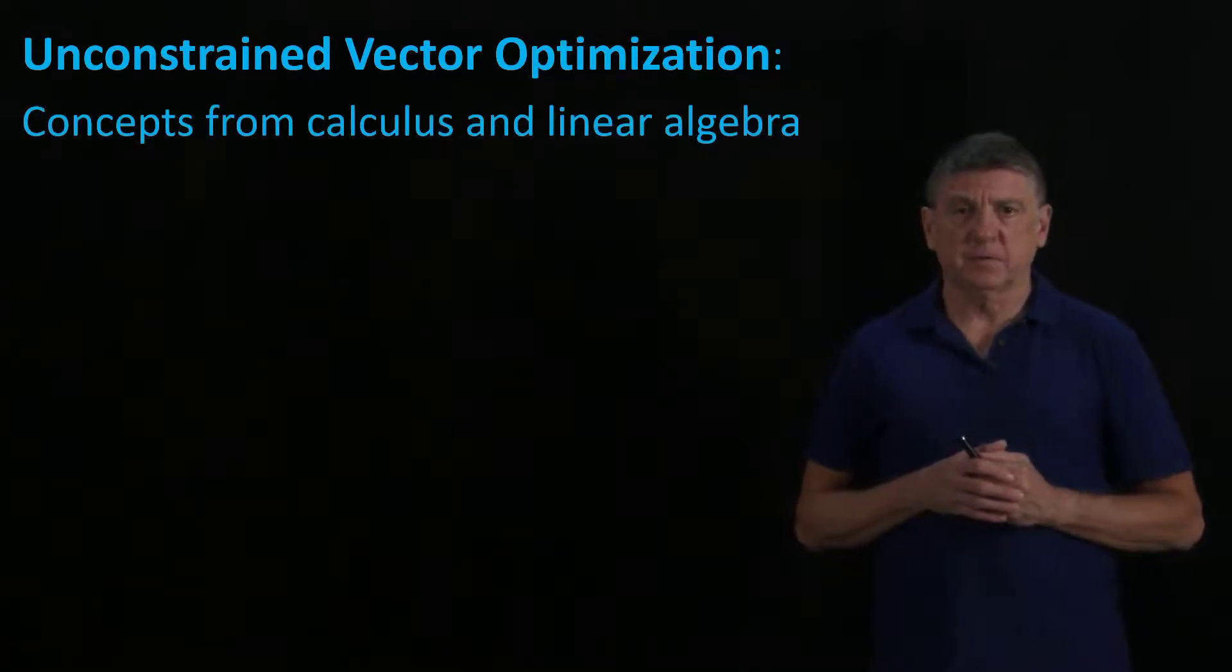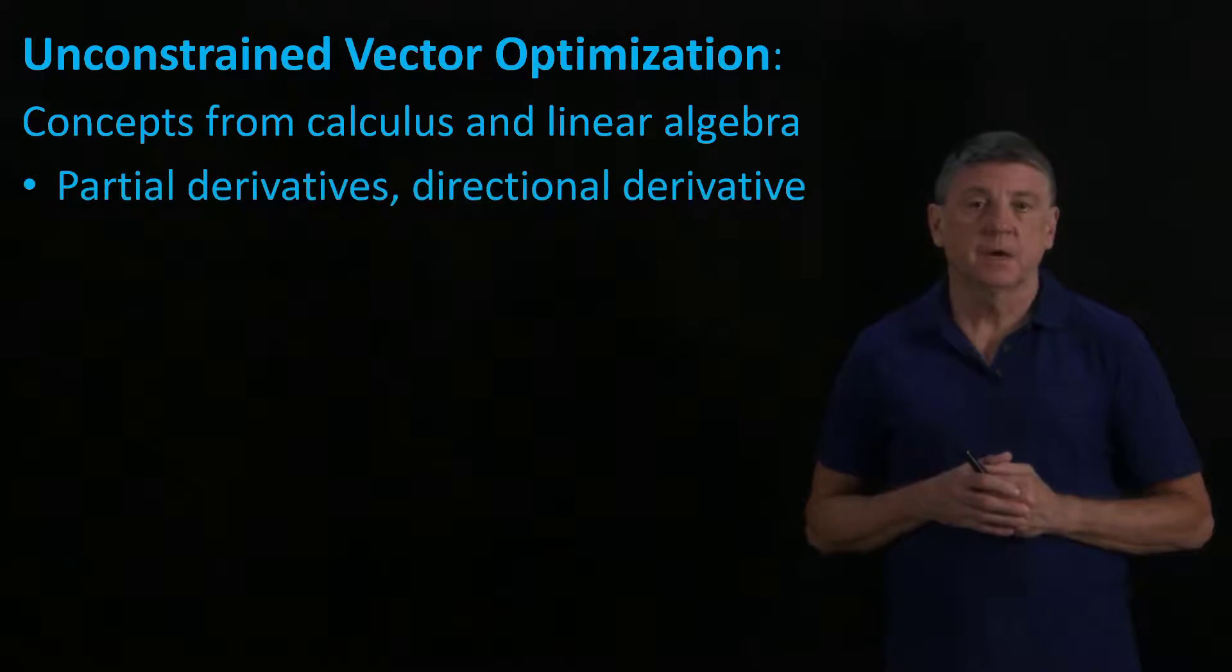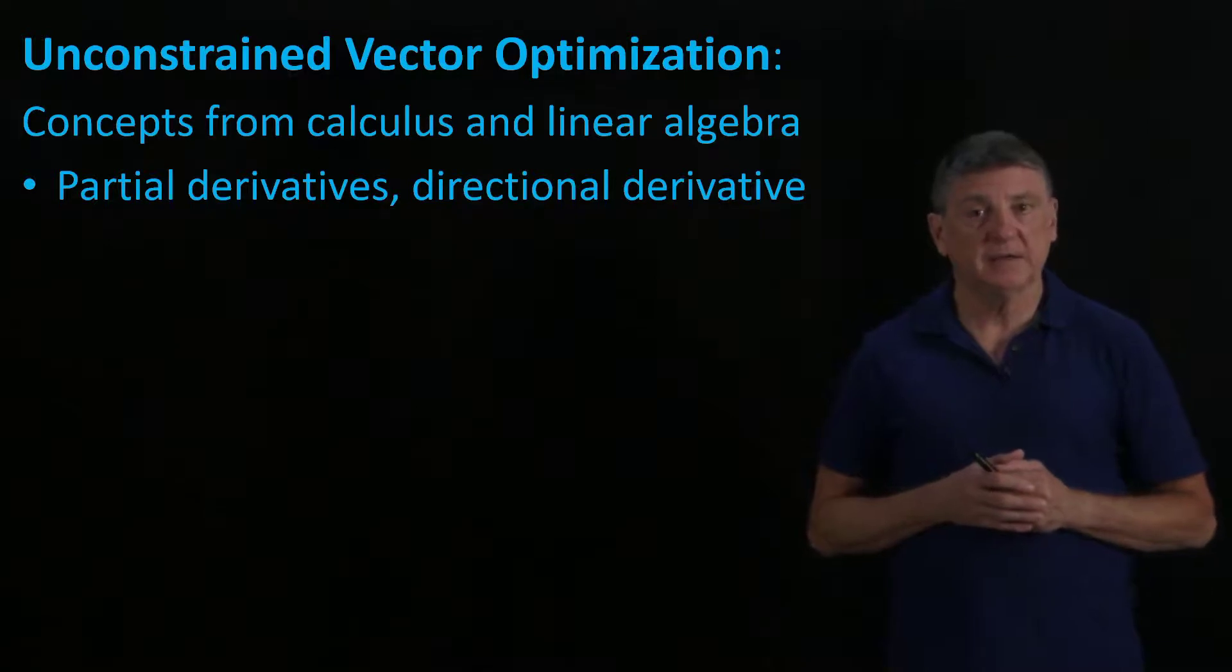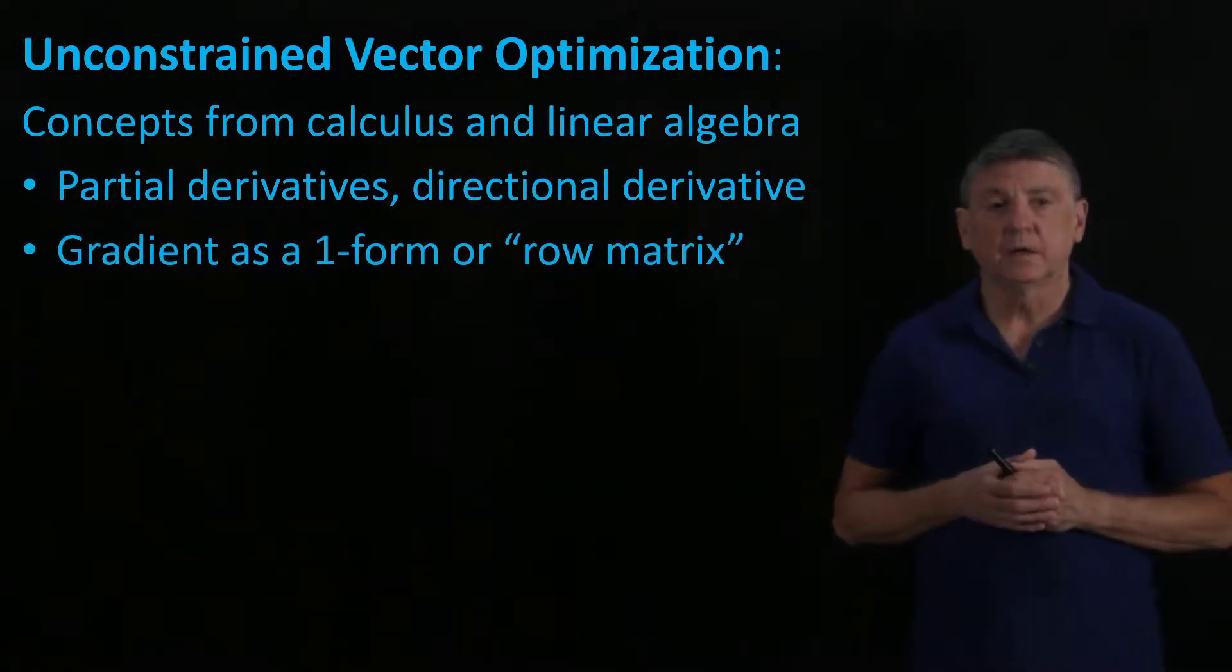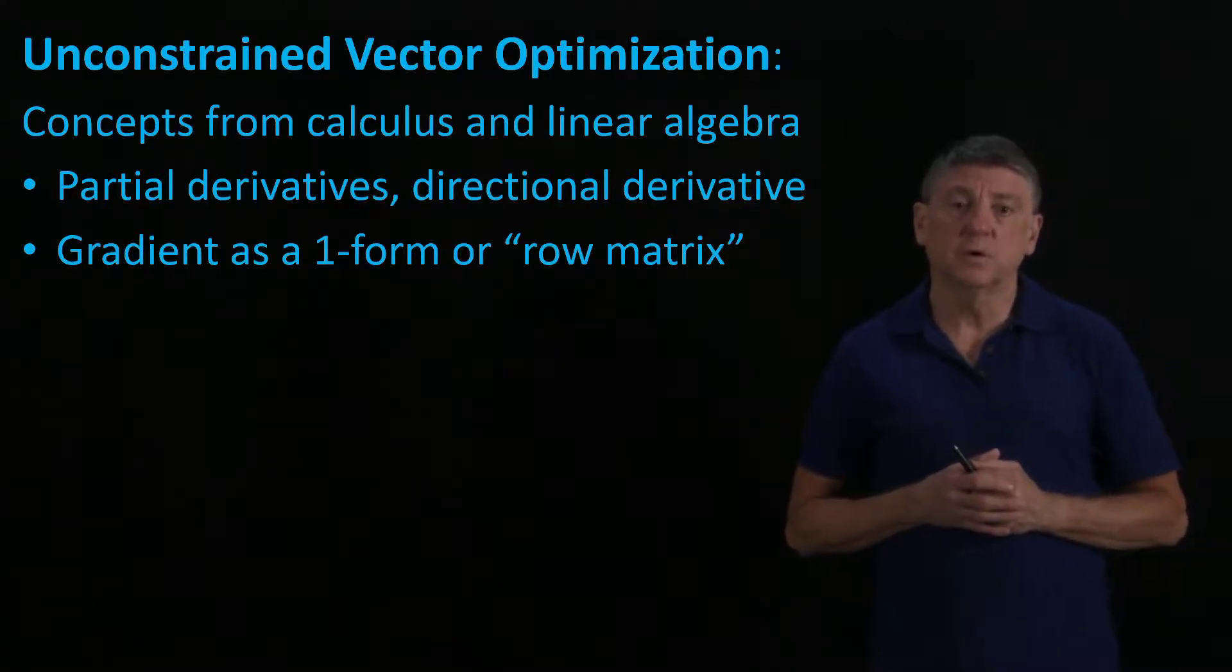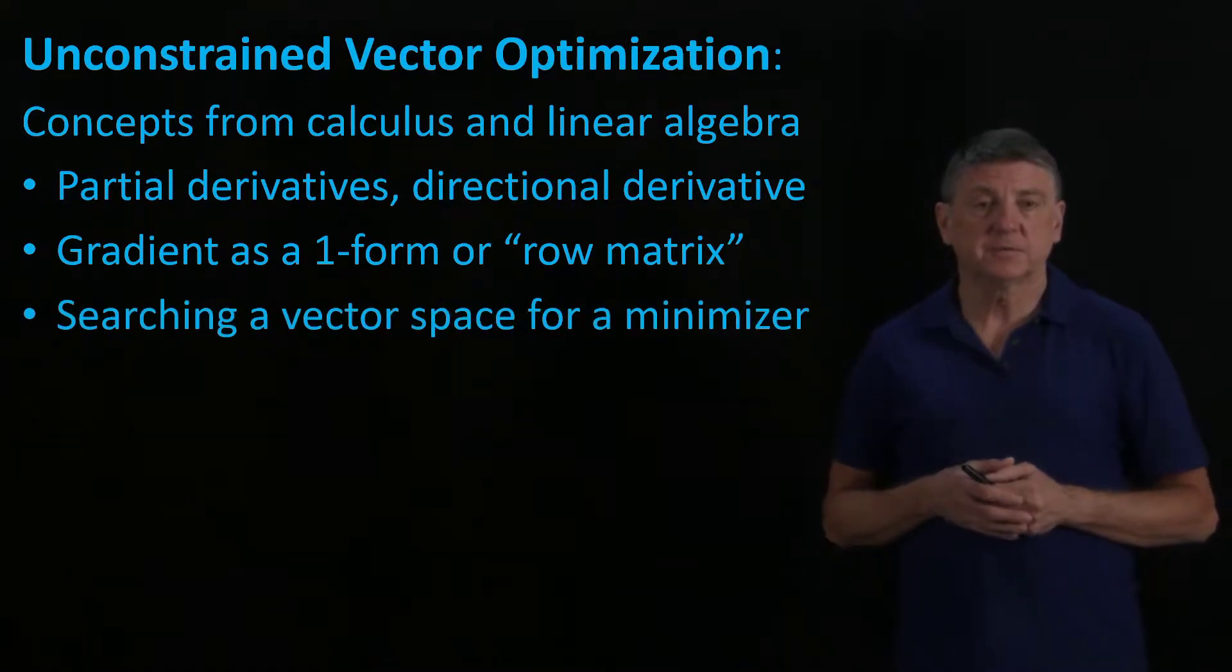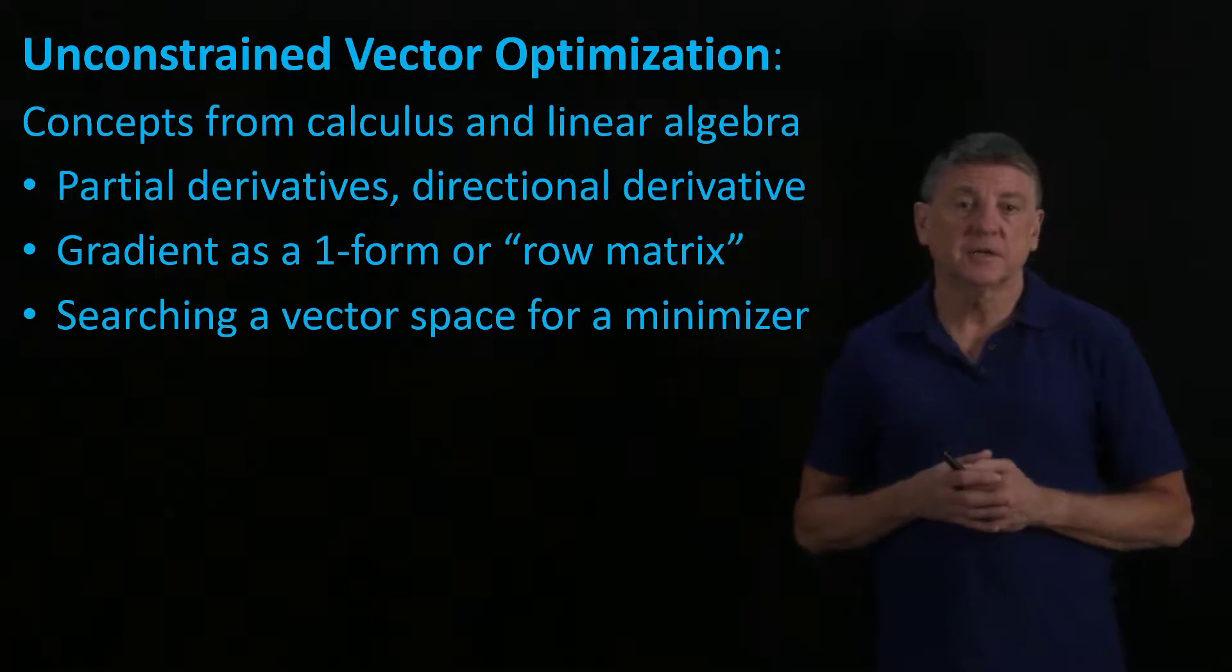When we move to unconstrained vector optimization, we're in vector land. The concepts will be calculus and again linear algebra because vectors are a linear algebra object. We're going to use partial derivatives and review the directional derivative. We'll look at gradients in a new way. Gradients are often represented in other sources as a vector, but we'll strictly speak of them as a one form or as a row matrix. What we'll be doing is searching in a vector space for a place where a function has a minimum.